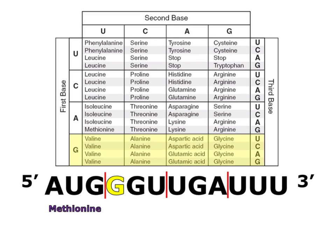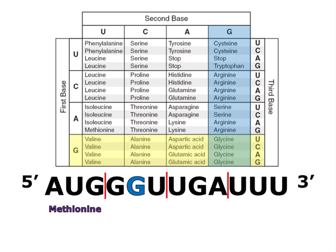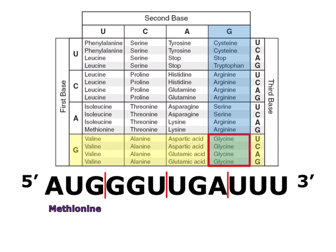Now we'll move on to the second codon. Since the first base is G, I'll be looking in the G row on my codon chart. The second base is also G, so you can see I've highlighted the G column in the codon chart. Once again, we'll find our answer in the box where this row and column overlap, and you can see a red outline around the box where our answer is found. Since the third base in this codon is U, I'll be looking at the top amino acid in this box, which is glycine.